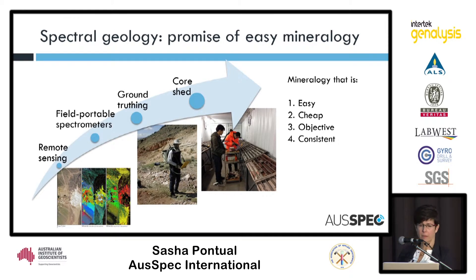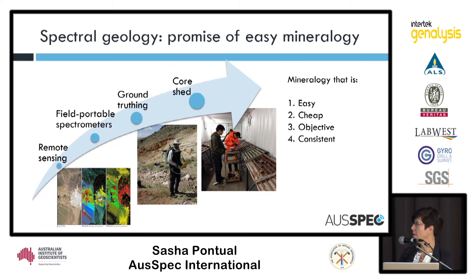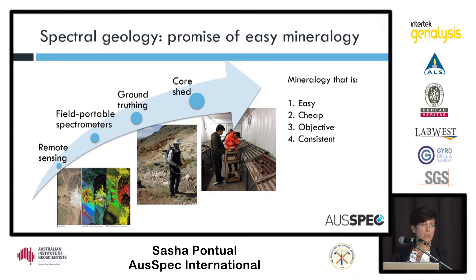From that developed additional spectrometers like the PIMA, which actually allowed people to go into the core shed. The ground truthing spectrometers generally work off solar illumination — they're usually set up about a metre above the ground with a wide field of view, relying on the sun. But the newer spectrometers from about the early 90s to present day have got internal light sources, so they're not reliant on solar illumination. The promise when these were developed was accessibility to easy, cheap, and fast mineralogy from these types of spectrometers.